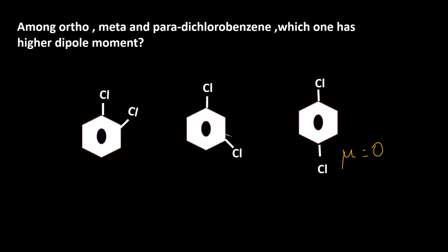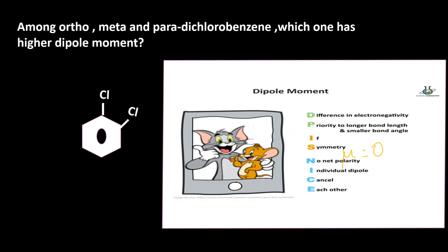Once again, see that DP is NICE. In that, P means priority to longer bond length and smaller bond angle. It means if smaller bond angle, then dipole moment is very high. So we go to compare ortho and meta bond angles.